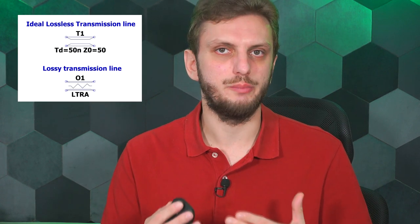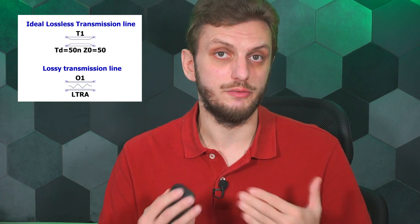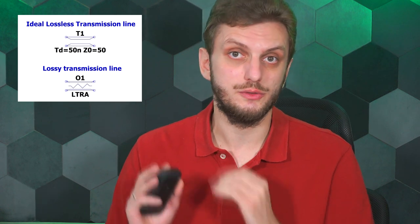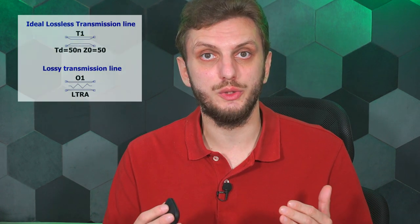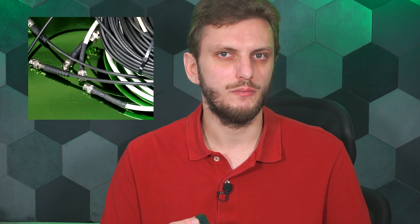Hello and welcome back. Today I want to talk about modeling transmission lines in LTSpice. One of the basic components available is the four-port transmission line, and this is good enough when you want to model something like an unbalanced structure, say a coax cable. But what about a more complex structure, like a shielded differential line?